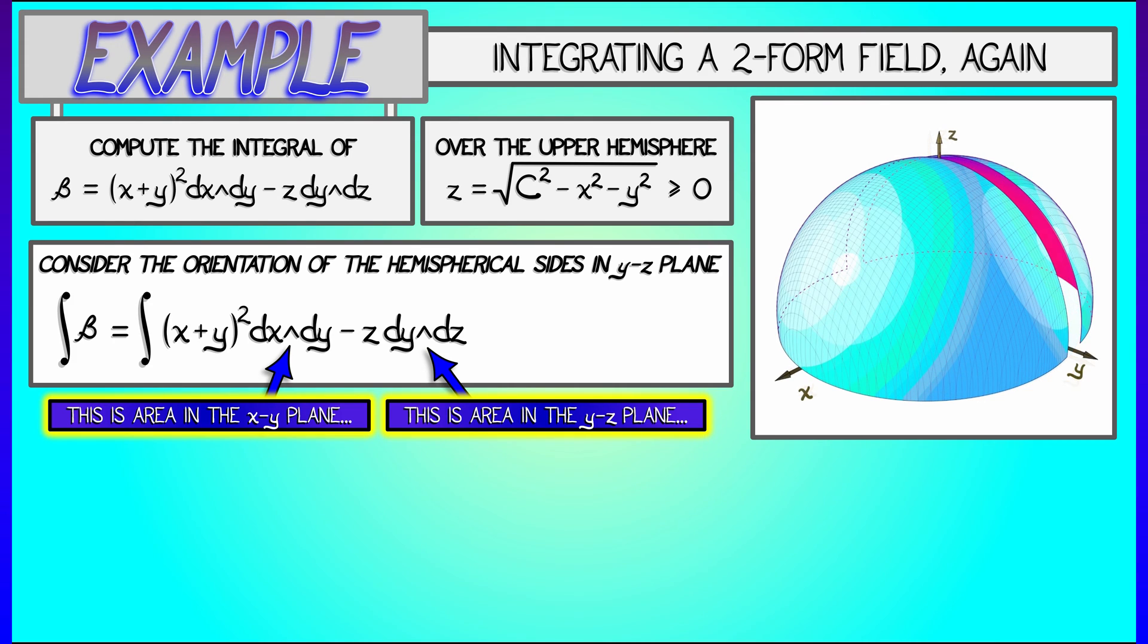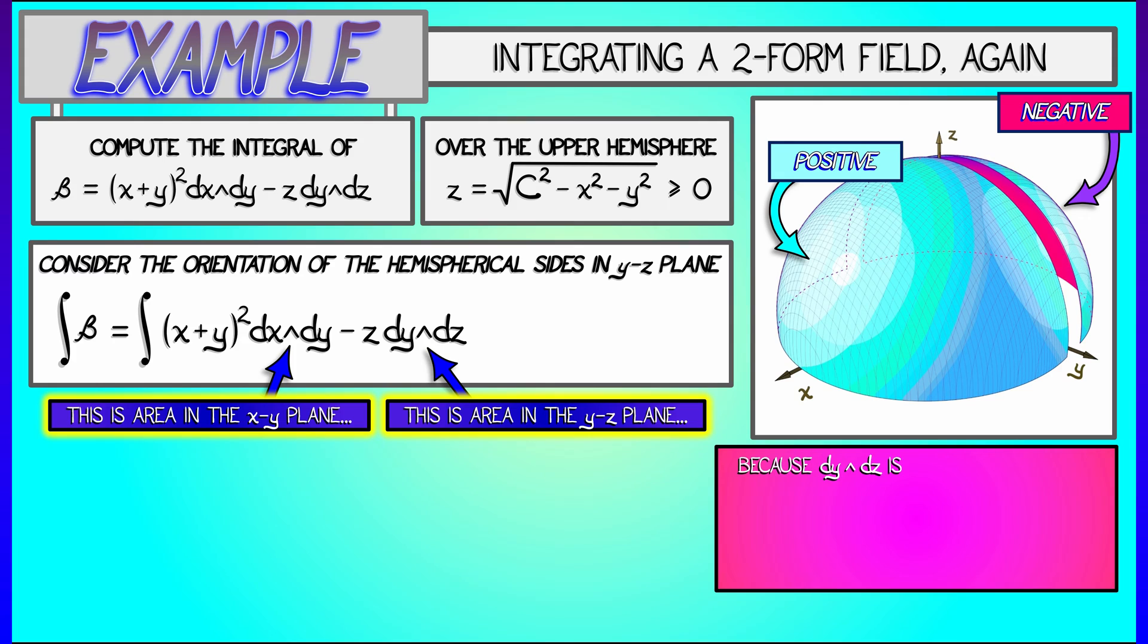It really has two sides to it. There's the positive side that projects to positive oriented area in yz, and then there's the back side, the negative side, that because of those outward pointing normals gives you the equal and opposite oriented area.